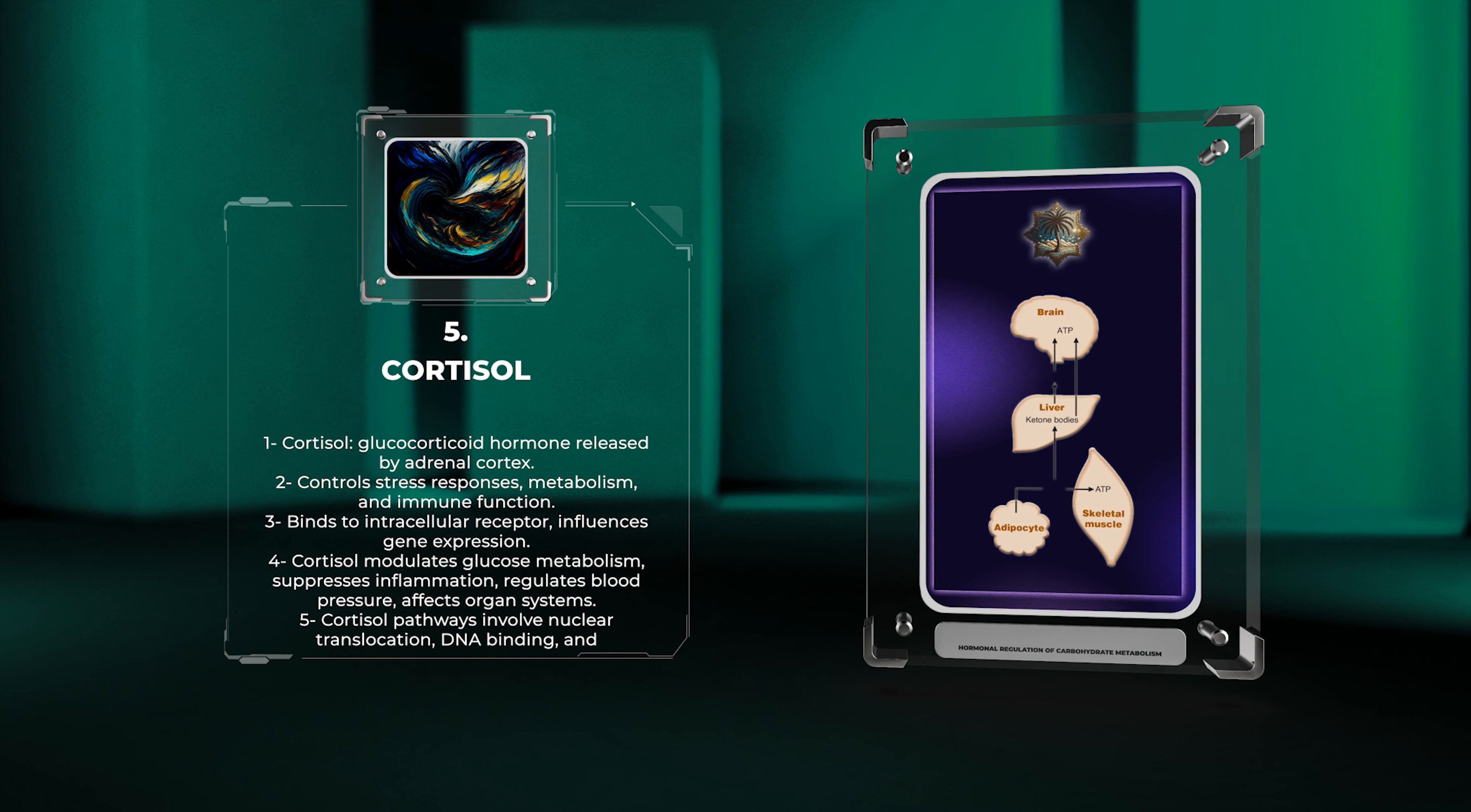Thyroid hormones, triiodothyronine (T3) and thyroxine (T4), are synthesized and released from the thyroid gland. They regulate metabolism, growth, and development in virtually every body tissue.